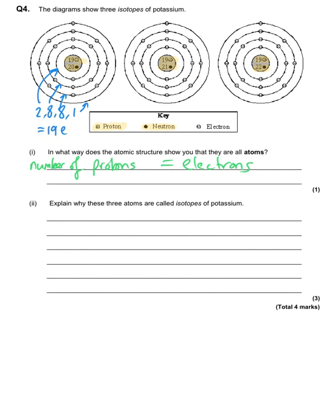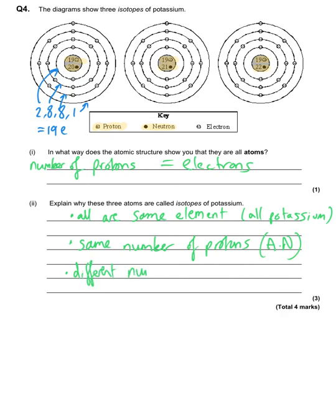The next part asks: why are these three called isotopes of potassium? First, they're isotopes of potassium because they're all the same element — all potassium. Next, they all have the same number of protons, or the same atomic number; you could specifically say they all have 19 protons. But they're isotopes because they have different numbers of neutrons — or you could say they have a different relative atomic mass or mass number. So they're the same element with the same number of protons but a different number of neutrons.